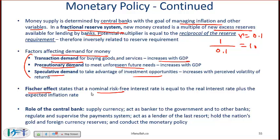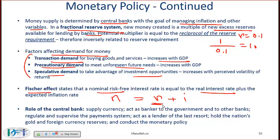The Fisher effect states that the nominal risk-free interest rate is equal to the real interest rate, generally denoted by R, plus inflation. So roughly speaking, your nominal interest rate, denoted by N, is equal to the real interest rate plus inflation.